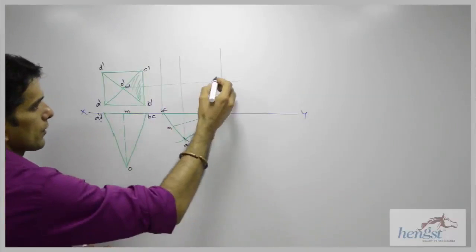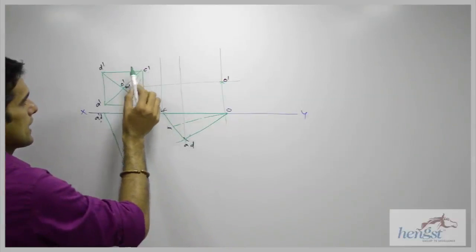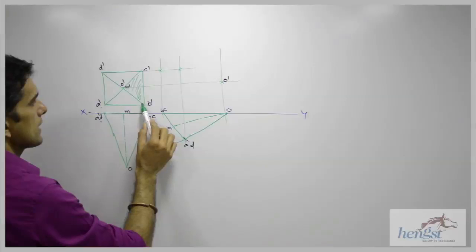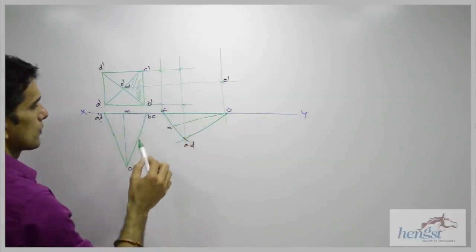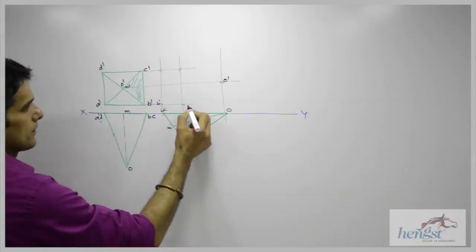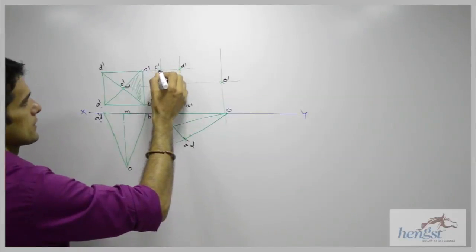So wherever they intersect, that is point O dash. Then I will extend C dash D dash from here. So I will get two points. Then I will extend AB from here. Then I will get two points. So this is B dash, this is A dash, D dash, C dash.